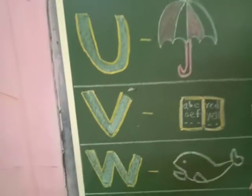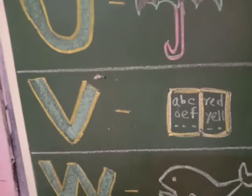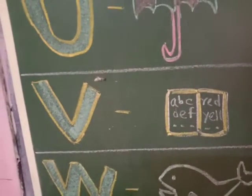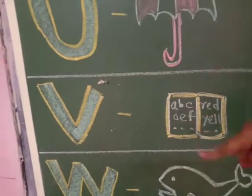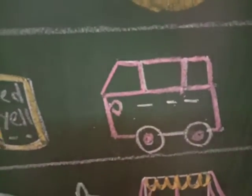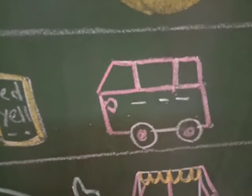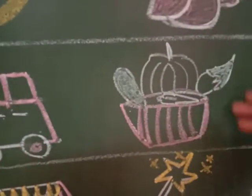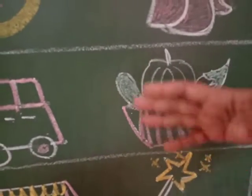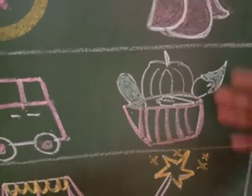Then V. V for vocabulary — this is vocabulary, these are many many letters and words. Then V for van, and here is a vegetable basket. Again, many many vegetables. So, vegetables!